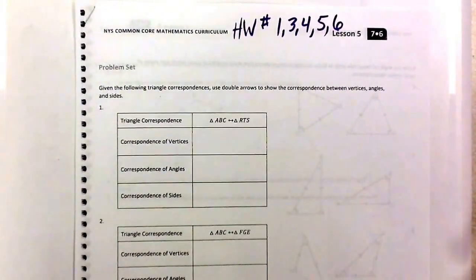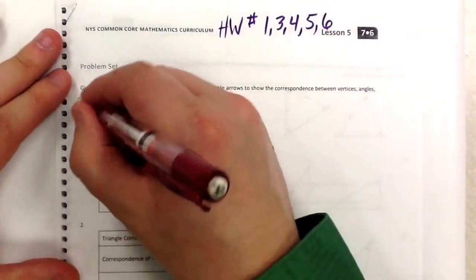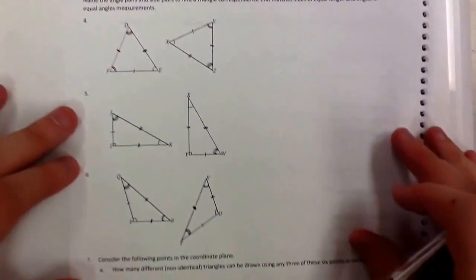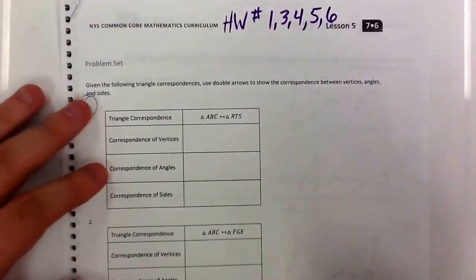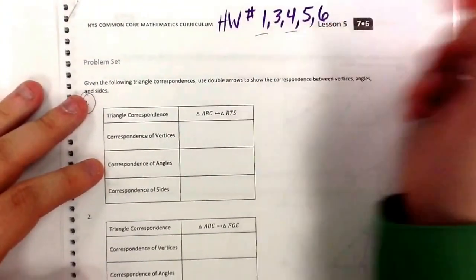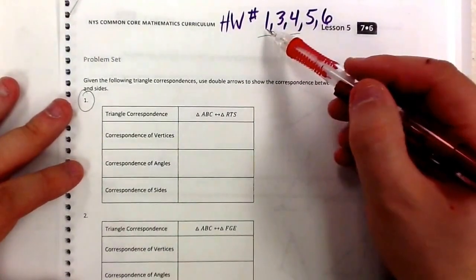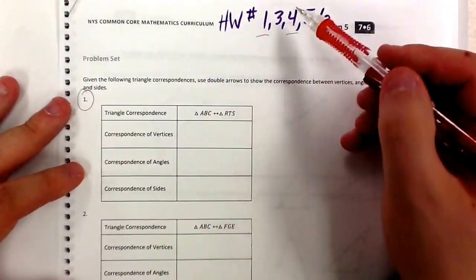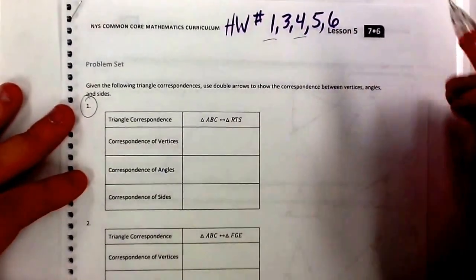For homework tonight, it's lesson 5, problem set numbers 1, 3, 4, 5, and 6. In this video though, I'm only going to do number 1 and number 4. By just doing these two problems, number 3 is just like number 1, so do number 3 the same way. And just how we do number 4, you're going to do 5 and 6. It's very straightforward.